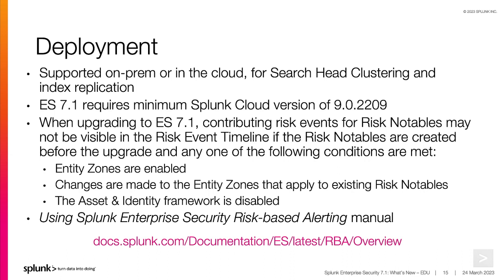When upgrading to ES 7.1, contributing risk events for risk notables may not be visible in the risk event timeline if the risk notables are created before the upgrade and any one of the following conditions are met: entity zones are newly enabled, changes are made to the entity zones that apply to the existing risk notables, or the assets and identities framework is disabled. Also note that a new Use Splunk Enterprise Security Risk-Based Alerting Manual has been added to the Splunk Enterprise Security documentation at the website shown here.